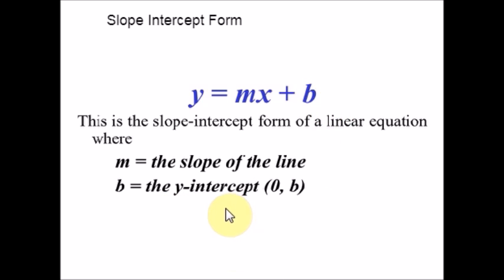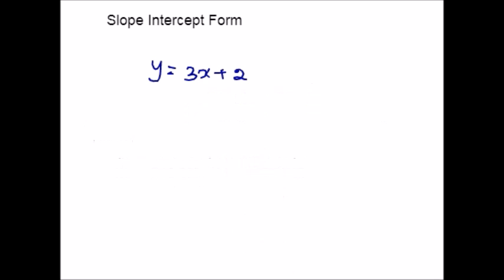Now let us look at a few examples of equations in slope-intercept form. Here is an example: y = 3x + 2. When an equation of a line is written in slope-intercept form, the number in front of the x represents the slope. So here the coefficient is 3 in front of x, meaning the slope of the line is 3. The constant written at the end represents the y-intercept. There is a positive 2 at the end, so the y-intercept here is 2. If you are asked to write the y-intercept as an ordered pair, it would be written as (0, 2).